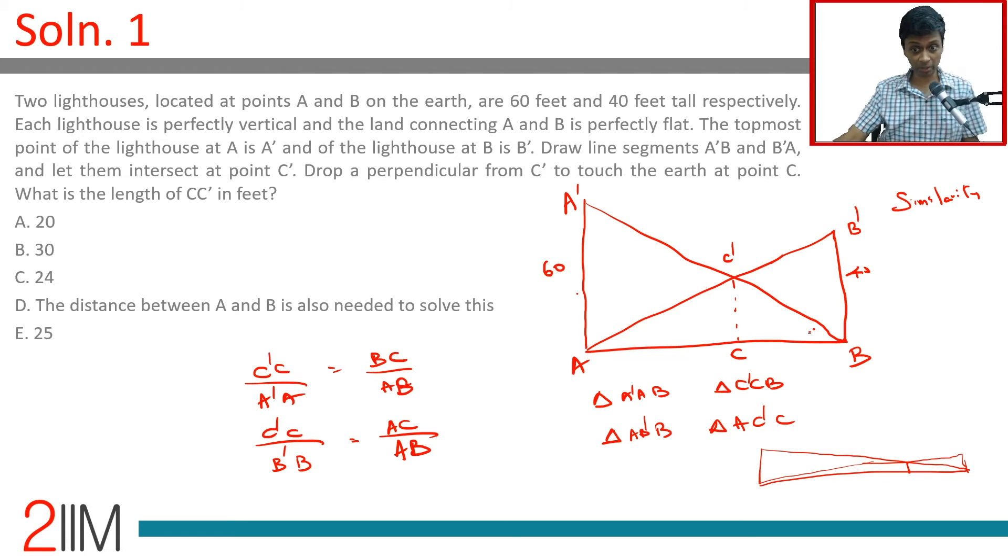It looks like it should depend on AB originally, straight away that's my first instinct. Then you look at it and you think about it, and it looks like, look, maybe it is independent of AB. Maybe whatever be the height, AC and CB could change, but C'C might not change.